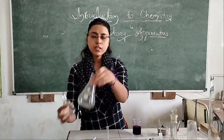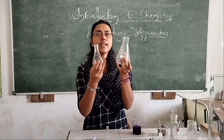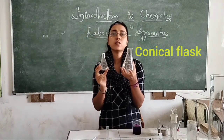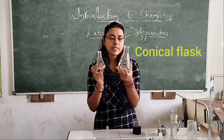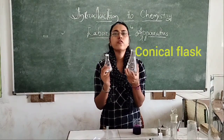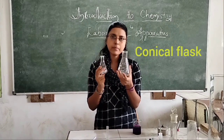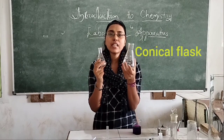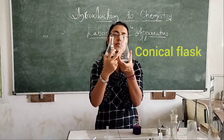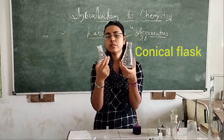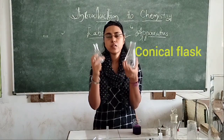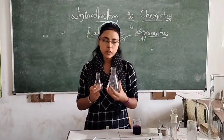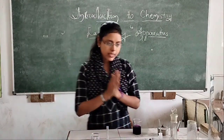This is a conical flask. You must have seen this kind of apparatus in your books — this shape and size. Conical flasks are used for titration and many more experiments. It has a cone-like shape, and here we have measurement markings up to 250 ml. We also have conical flasks of 100 ml. So in this conical flask we used to perform experiments like titration and many more.